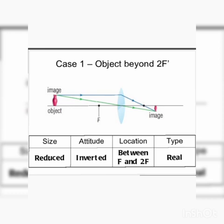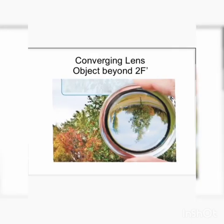Case 1: Object beyond 2F. If your object is beyond 2F, the first ray travels parallel to the principal axis and bends inward through the principal focus. The second ray goes through the optical center directly. Here is the joining point where image formation occurs. Image type: real. Size: smaller as compared to your object. Attitude: inverted. Location: between F and 2F.